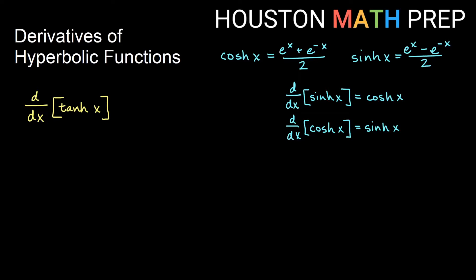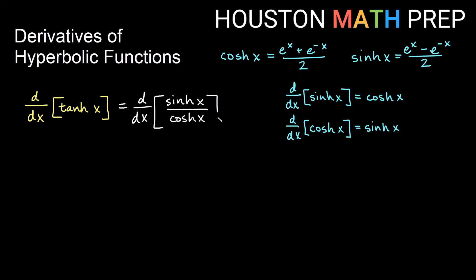We'll move on to hyperbolic tangent now. Instead of using the exponential definitions for this one, I'm going to use something from our intro video — that the way we define hyperbolic tangent is just like regular tangent. We're going to think of this as sinh of x over cosh of x. So I'm going to do a quotient rule here. The quotient rule will be the low function, which is cosh of x, times the derivative of the high function. We just found the derivative of sinh x — it's cosh x — so I get another cosh x there.